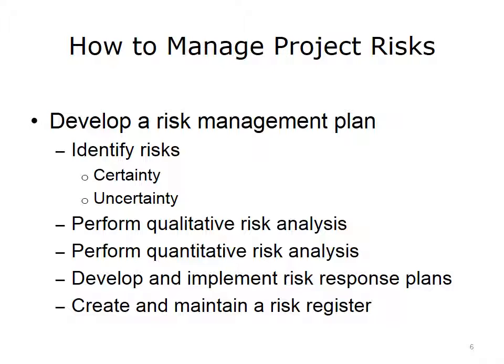At the other end of the spectrum, an example of a high-uncertainty project might be implementing an electronic health record system for the first time. If this is a novel project with a lot of unknowns, your uncertainty level will be higher. After identifying risks, the next step is to perform a qualitative risk analysis. Qualitative risk analysis often includes input from various stakeholders and considers probability and impact data. This type of analysis helps you prioritize risks for further evaluation, which will include quantitative analysis. Quantitative analysis allows you to map a specific value to the risk. Combining these multiple elements in our risk assessment helps us develop a more accurate understanding of our threat level.